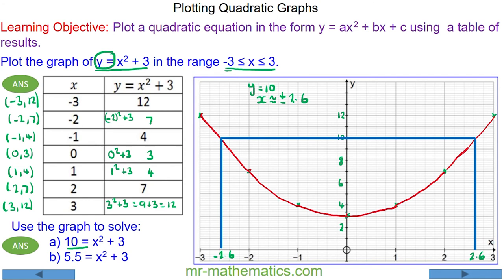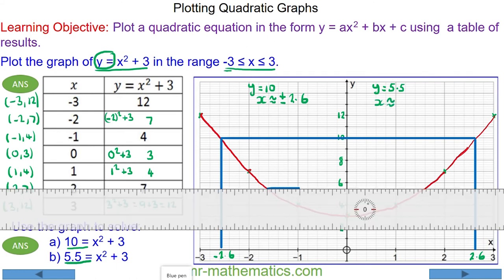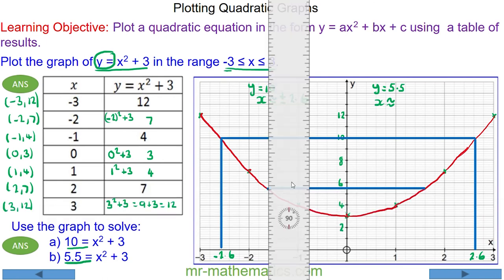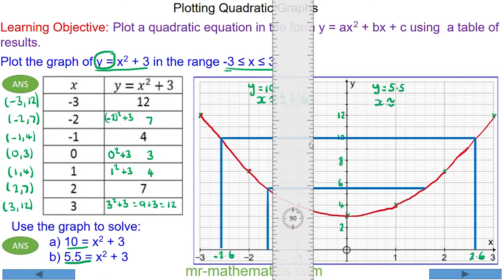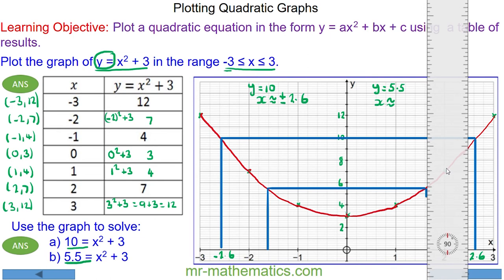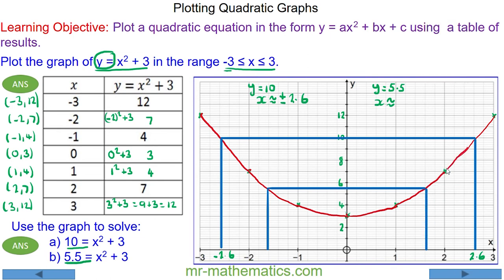For question B, when y is equal to 5.5, we can work out the values of x. We'll draw a horizontal line at y equals 5.5 to the curve. Where the line touches the curve, we'll draw two vertical lines down to the x-axis. And you can read off these points as x is approximately negative 1.6 and positive 1.6. So the solutions are approximately plus or minus 1.6.